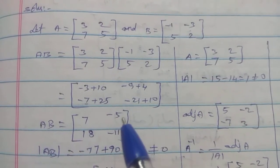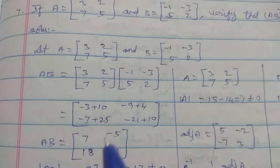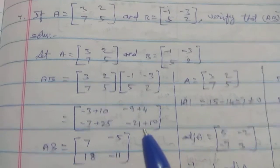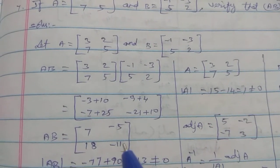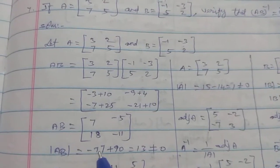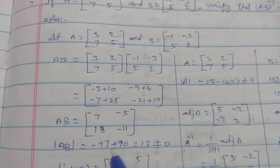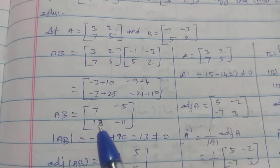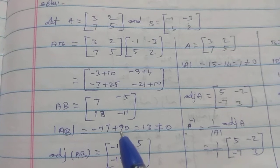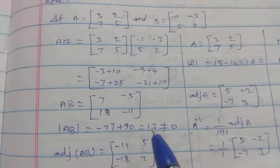Second row second column: 7 into minus 3 is minus 21, plus 5 into 2 is plus 10. So AB equals [-3+10, -9+4; -7+25, -21+10] = [7, -5; 18, -11]. Determinant of AB equals 7 into minus 11 minus 77, minus 18 into minus 5 equals plus 90. So 90 minus 77 equals 13, which is not equal to 0.